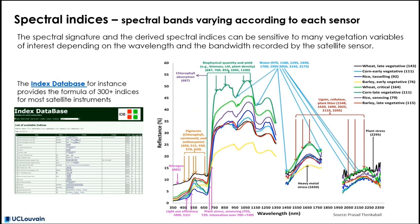To conclude on spectral indices, it is important to mention that spectral band numbers recorded for a given sensor do not correspond to those of other sensors. As illustrated on many spectral signatures, bands can be selected to be primarily sensitive to a very specific component of a crop or to a given stress. Therefore, each sensor has its own set of bands which can be combined into spectral indices. This is why you may find very useful the index database, which provides the formula for more than 300 indices for most existing satellite instruments.